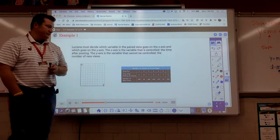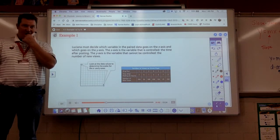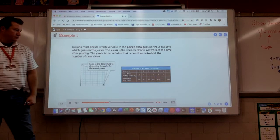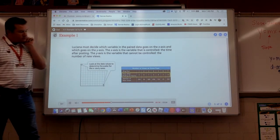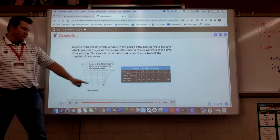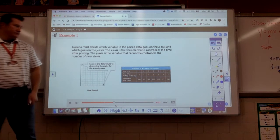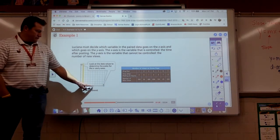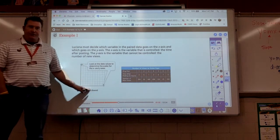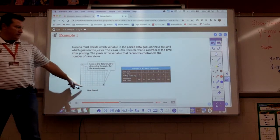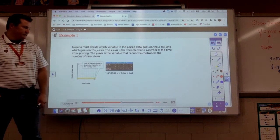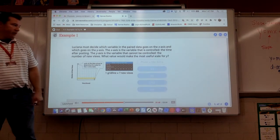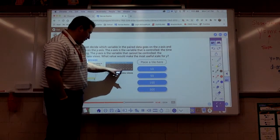We can debate about, okay, do we count by 5s or 10s or 20s? But that's the first thing I need to do, right, is label my axes and then figure out what are we going to count by. So let's see what the book does. She must decide which variable in the paired data goes on the X axis and which goes on the Y axis. Y depends on X. The X axis is the variable that is controlled, the time after posting. Always. Because the maximum value of X in the data is 7 and the coordinate grid is 10 by 10, a scale of 1 grid line equals 1 hour makes sense for this data.